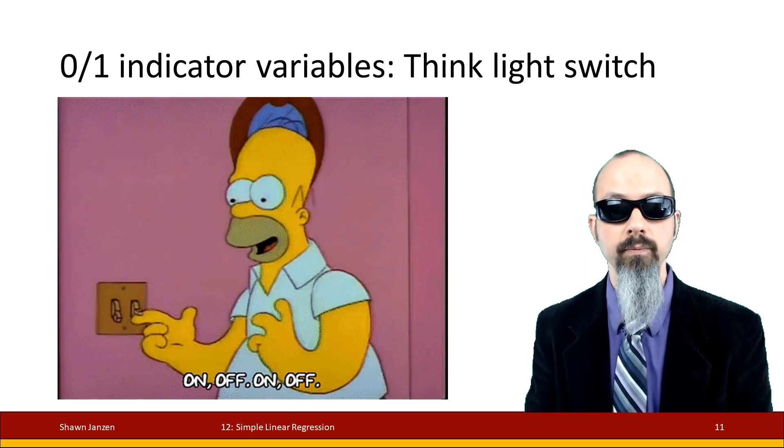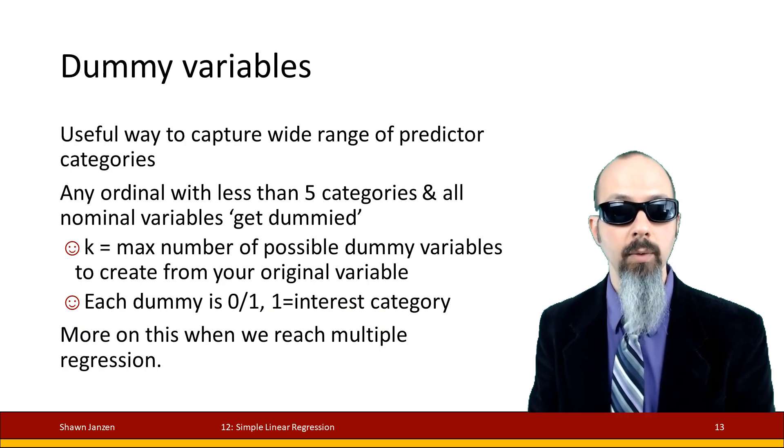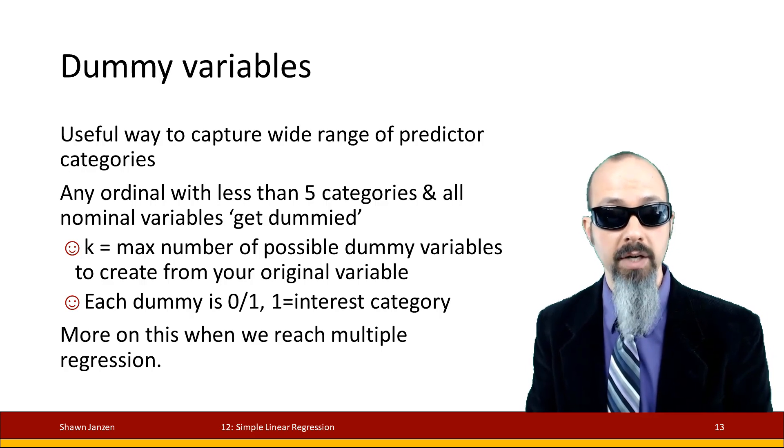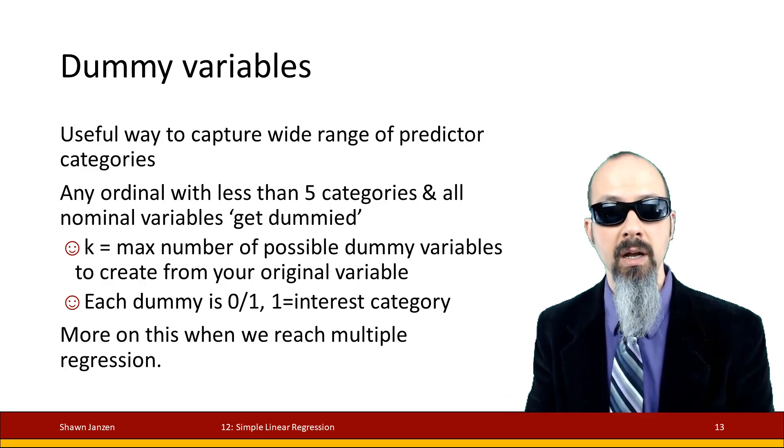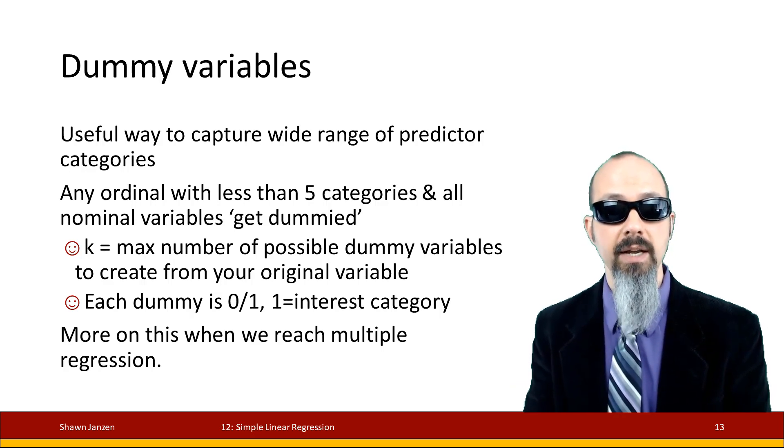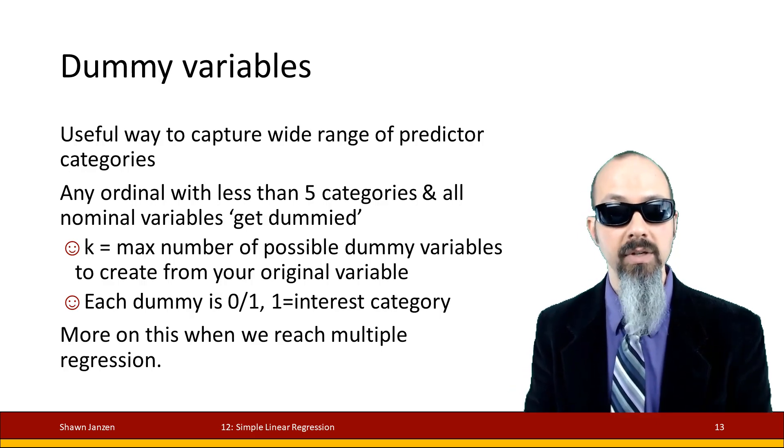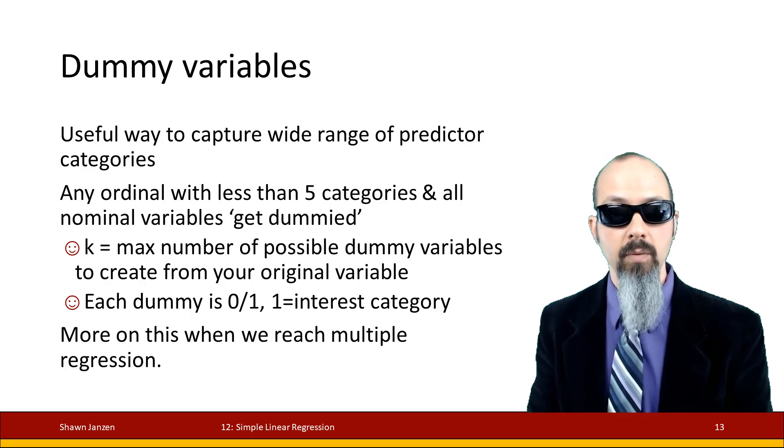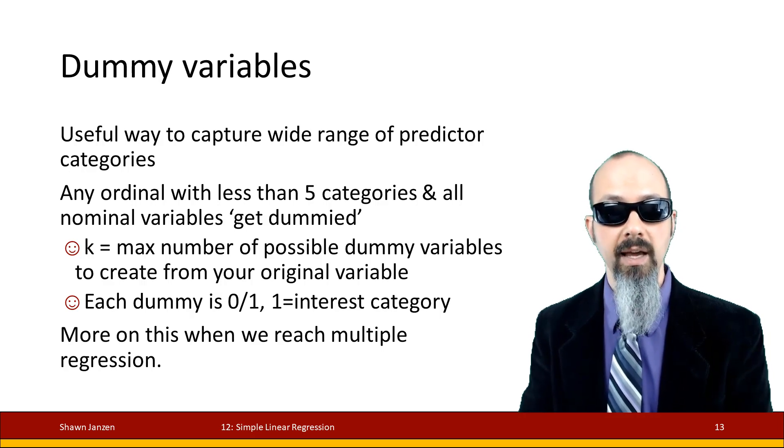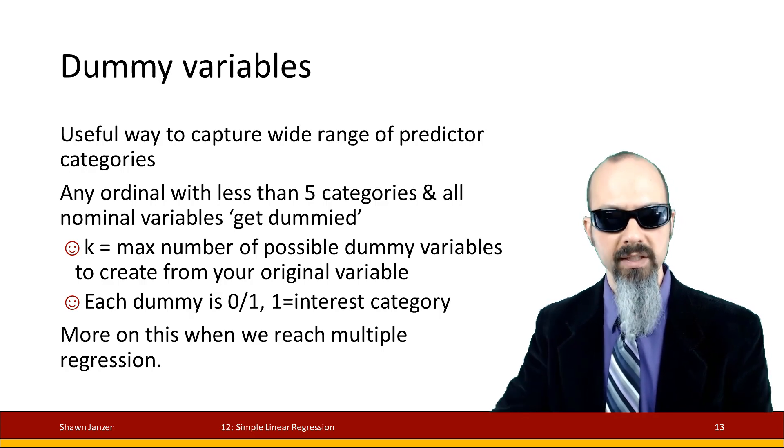Let's talk about dummy IVs. Dummy IVs are a way to capture a wider range of predicted categories. We're going to expand this topic more into multiple regression heavily, but I'll give you a slight intro here. Any ordinal variable with less than five categories and all nominal variables we dummy code. Dummy code means we can create a series of zero-one dichotomous variables up to k minus one. We can make up to k where k is the number of groups, and generally in our regressions we make k minus one.